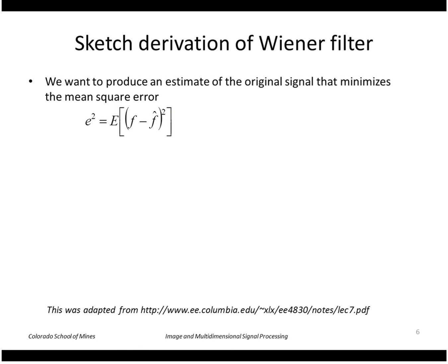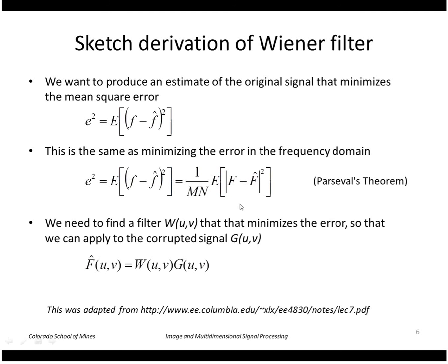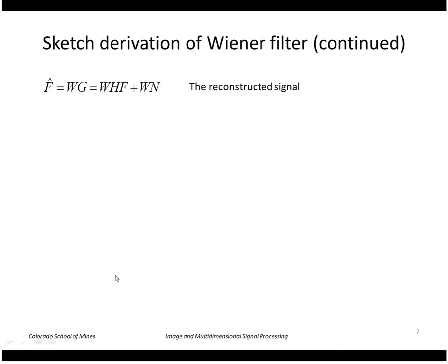I'm just going to sketch the derivation of the Wiener filter. We want to produce an estimate of the original signal that minimizes the mean squared error. This is the same as minimizing the error in the frequency domain, taking the expected value of f minus f hat squared. We're trying to find a filter w, the Wiener filter, that minimizes the error such that we can apply that Wiener filter to our corrupted signal to get our estimated result. Here is the expression f hat equals w times g. If I substitute in what g is, namely h times f plus n, I get this.